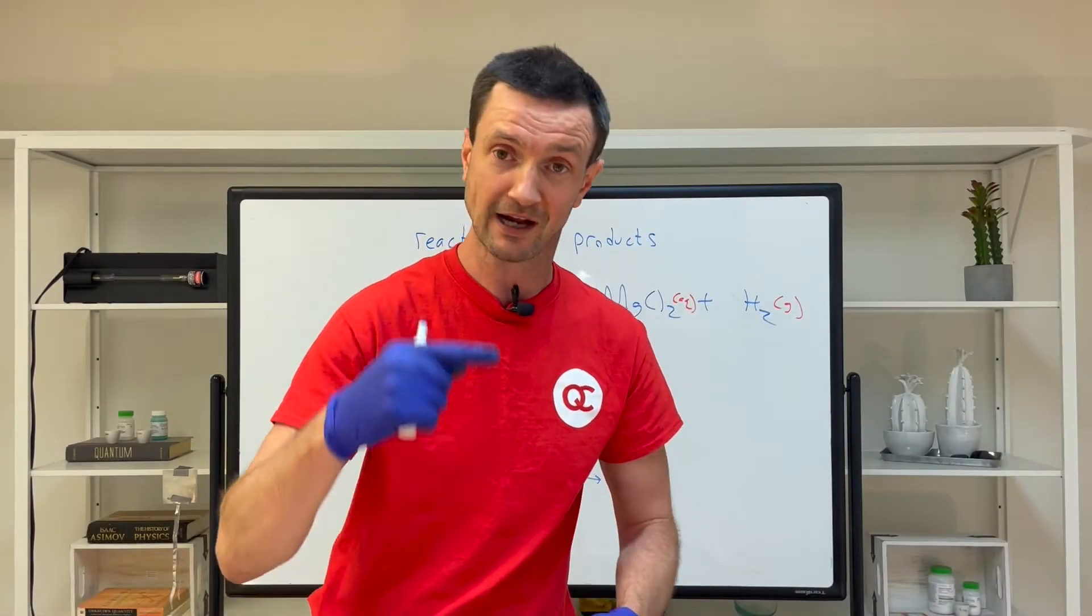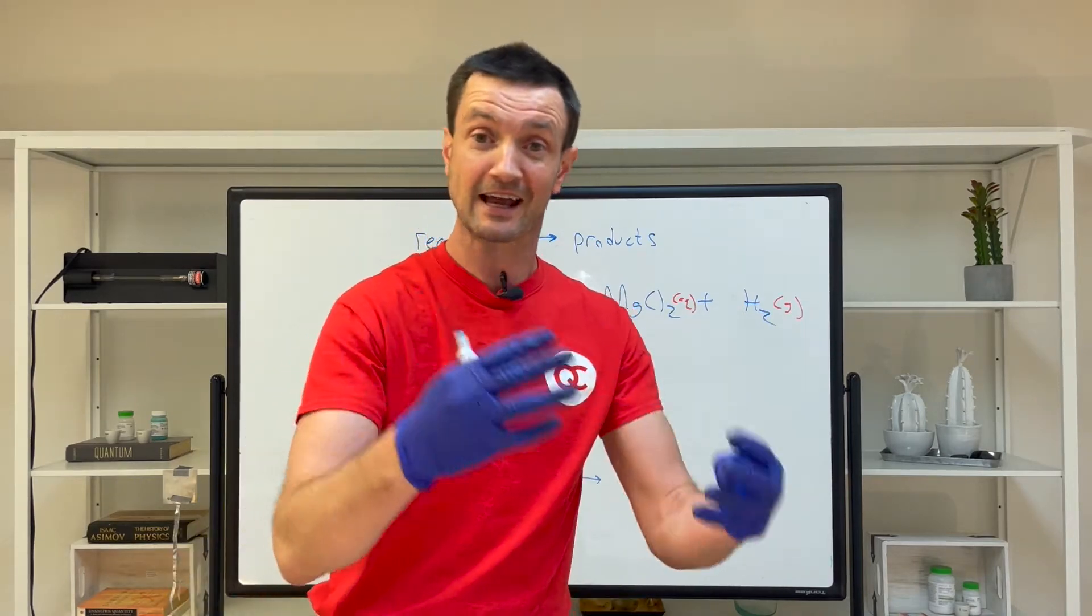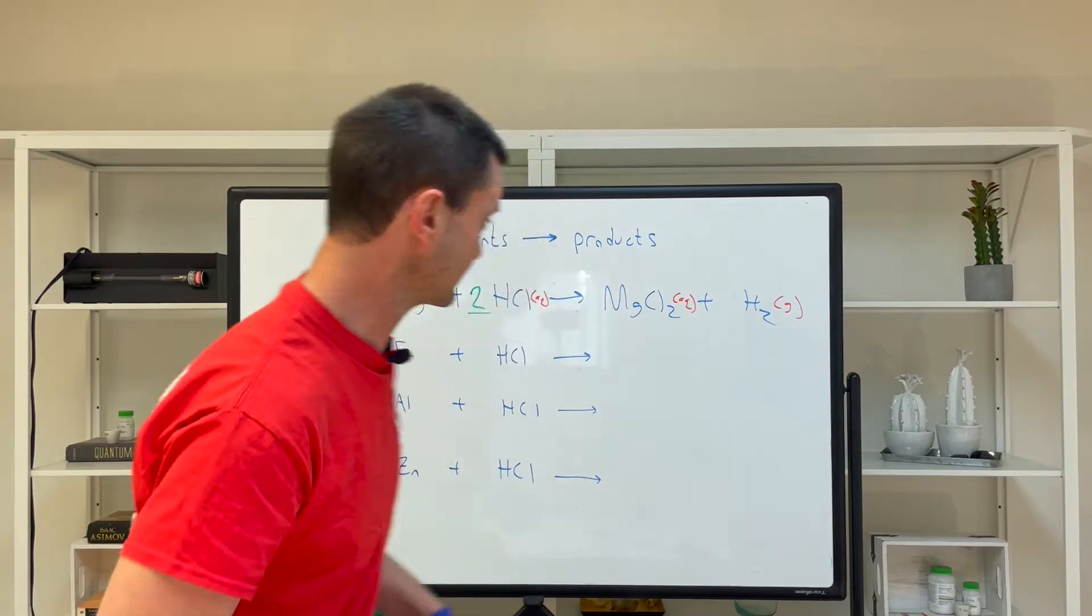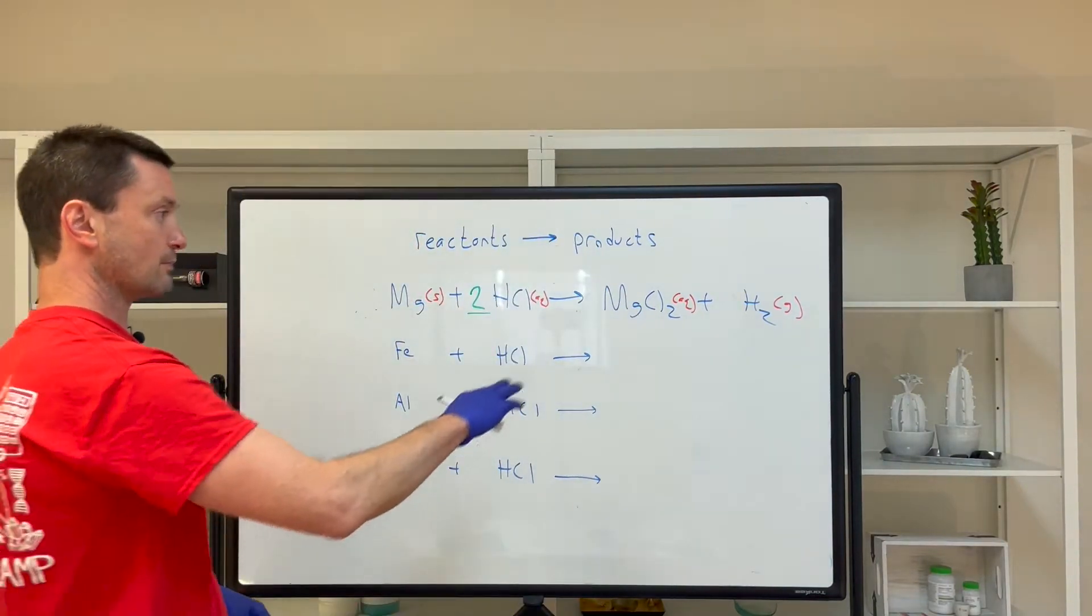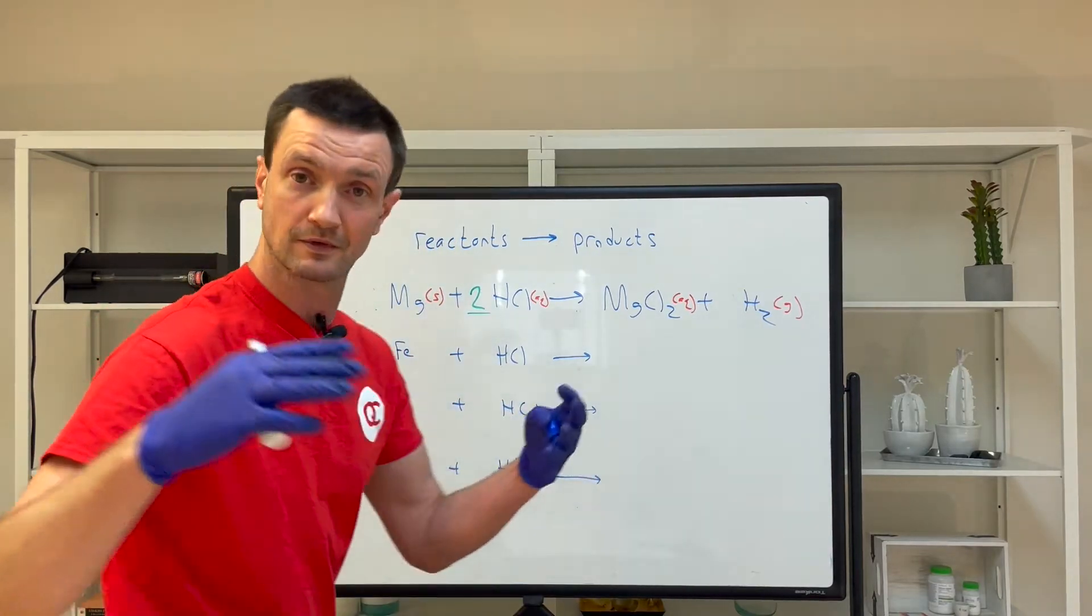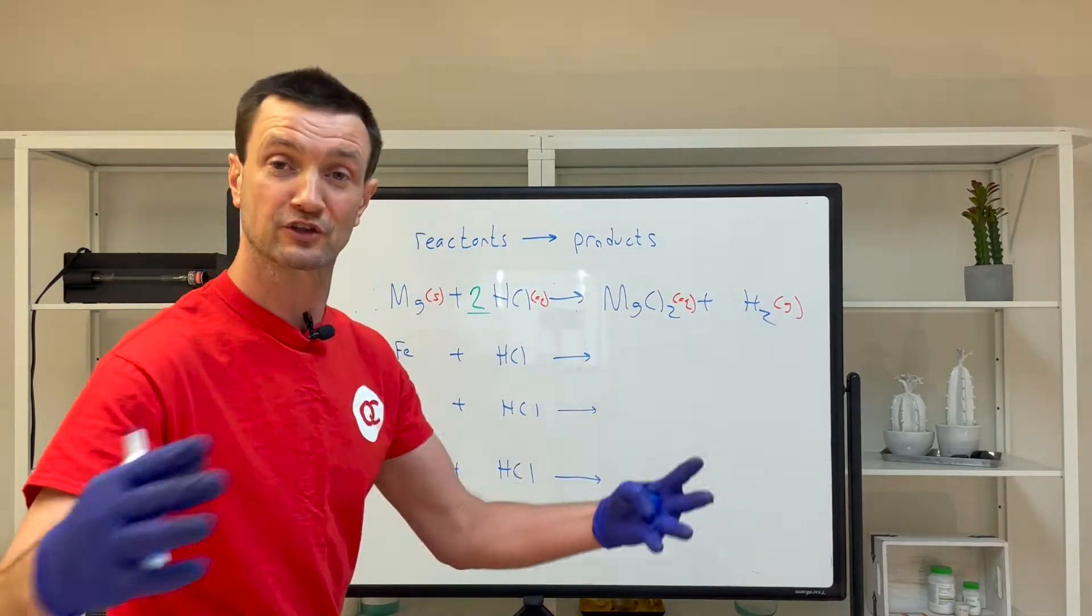Without being able to effectively run a hydrogen flame test because there's not enough gas being produced, we're just going to have to rely on instincts. We know there's a gas being produced. Hydrogen gas is clearly a decent hypothesis. What else could be produced?